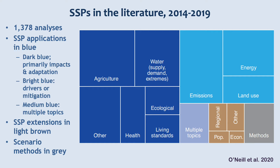Brian O'Neill published a paper a few months ago looking at the achievements of the RCP-SSP framework. This figure from that paper shows that over the six-year period covered in the analyses, there were nearly 1,400 analyses using the SSPs. About half of the applications were for impacts and adaptation, and about a third were for drivers or mitigation. With such a rich and growing literature base, I will cherry-pick a few examples to give you some ideas of where you could start doing your own analyses.